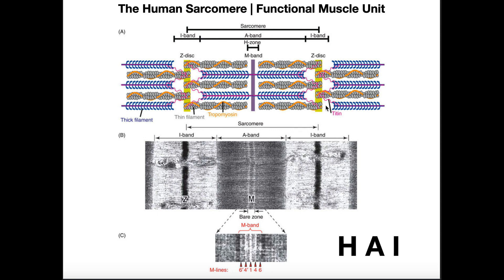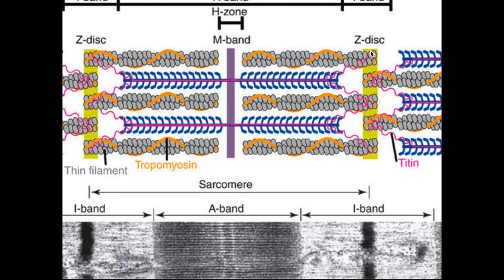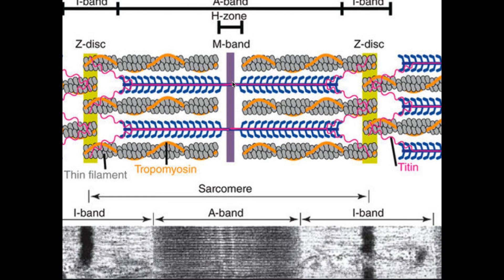There's also another protein here called titin, shown in pink. Titin attaches to the Z-disc on one end, connects over to the thick filament, and traverses all the way to the M-line. It's a very large protein — in fact, the largest protein encoded in the human genome. Titin is an elastic protein that connects the M-line to the Z-disc, and its job is to limit the stretch of the sarcomere so it isn't severely damaged.